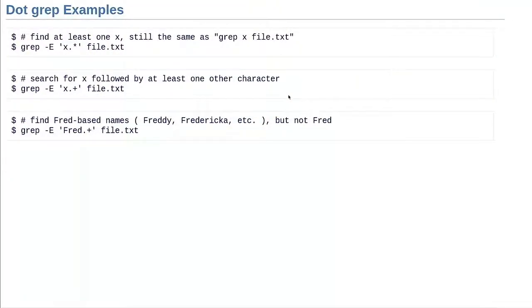Some dot examples. `x.*` is still just 'grab x' because dot-star says find zero or more anything — zero is still zero, so any x will do. `x.+` says I want x and at least one other character after it. The last example, `Fred.+`, looks for derivatives of the name Fred that start with Fred — like Freddy or Frederica — but it does NOT match 'Fred' alone because there's got to be something after that D.